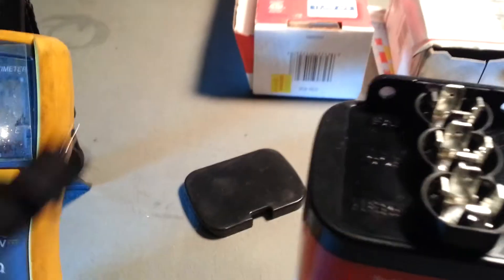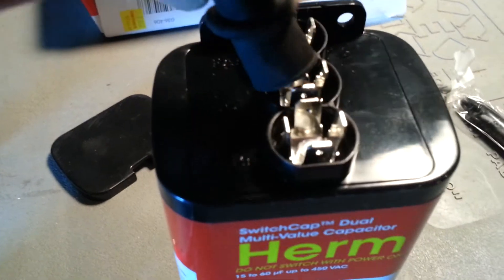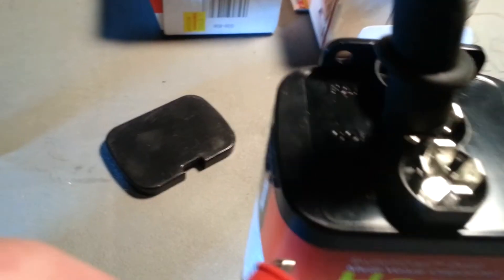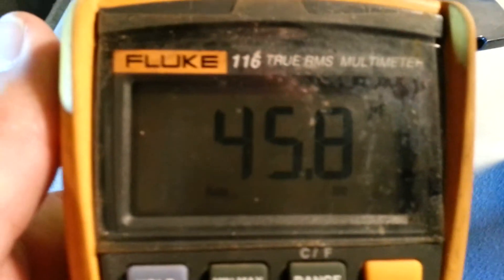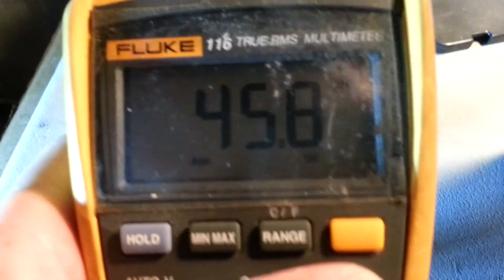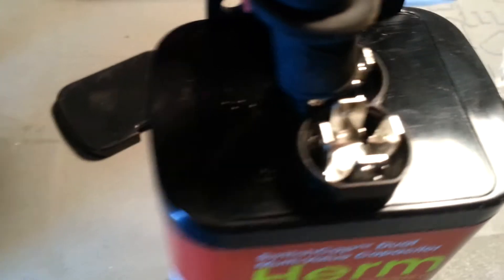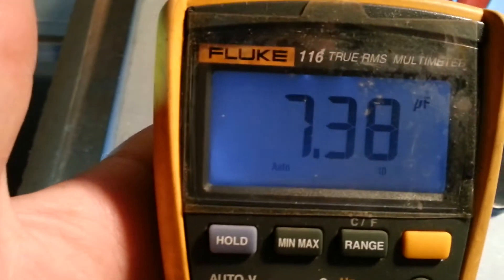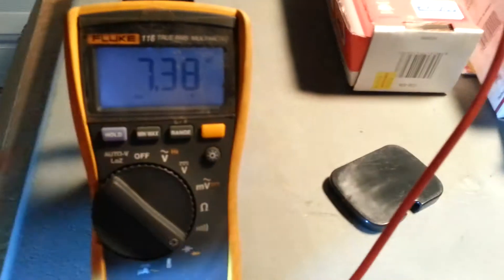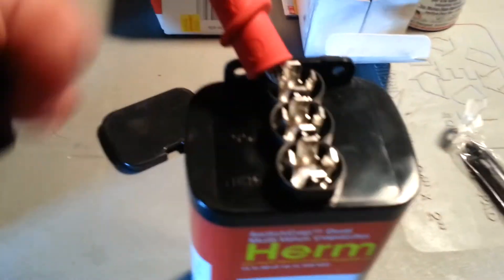Okay, now let's check that out. So, you've got your common in the middle. Here's Hermetic side. Okay. 45.8 Microfarad. Perfect. Okay. 7.5 side. 7.38. So, both of them are right in line, doing what they're supposed to be doing.